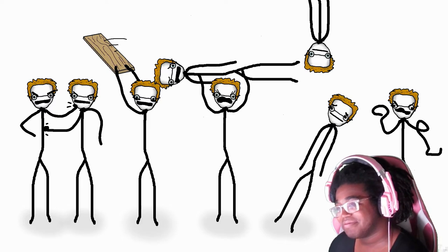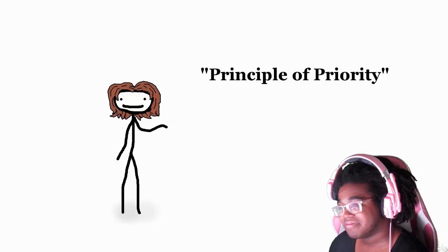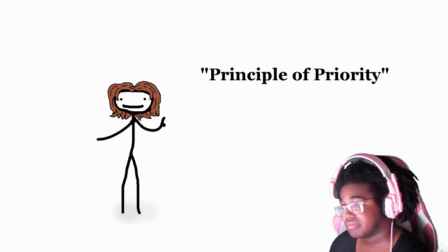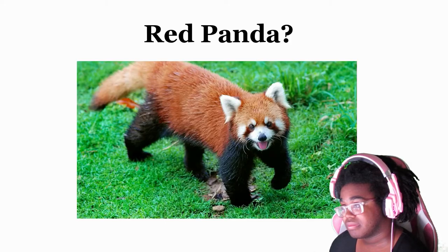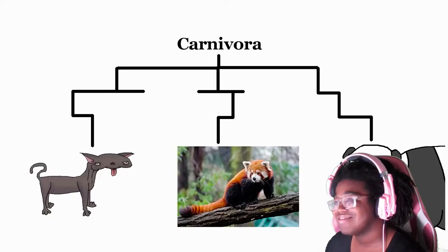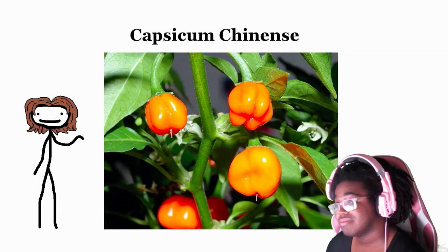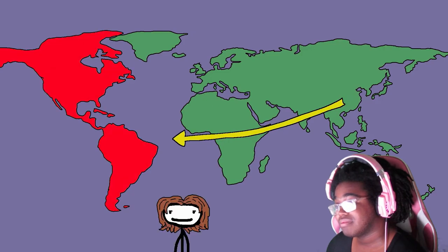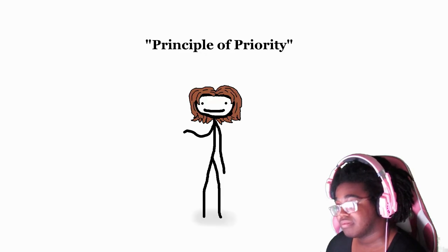While this all seems kind of chaotic, there is some method to the madness. One rule is the principle of priority: once somebody publishes their chosen name for a species for the first time, that's the name and other taxonomists typically can't change it. This has led to plenty of misnomers coined by whoever got their foot in the door first, particularly before we had the luxury of genetic analysis.